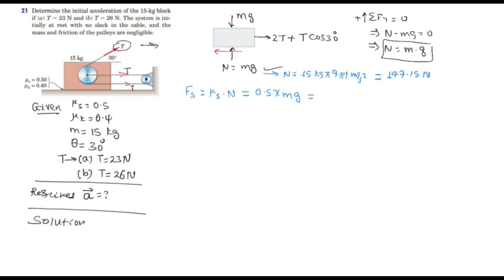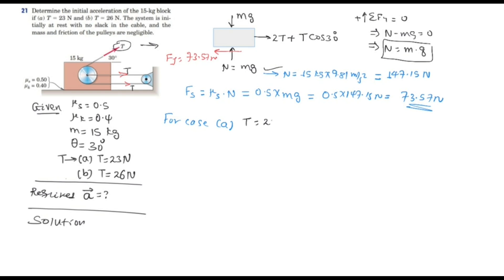The static frictional force is 73.57 newton. Now let's determine whether the system can move for both cases. For case A, the tension is 23 newton. Let's calculate the total horizontal force fx.